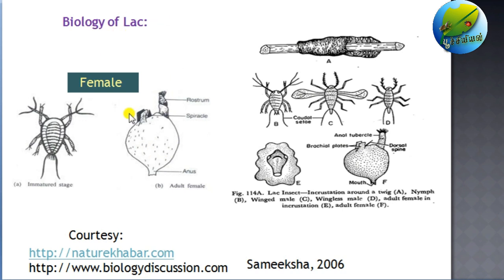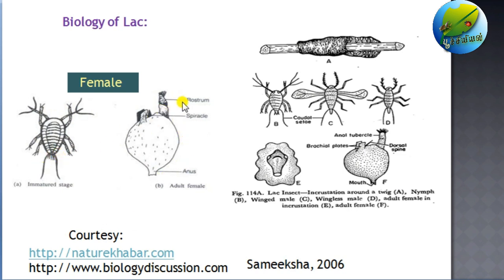Now let us look into the biology of the lac insect. Female lac insects in their immature stages — especially during the first instar — have all appendages like antennae, legs, and setae. When they go for the first molting, they lose all these parts like legs. As they reach adulthood, the only appendages visible outside will be the rostrum, spiracles, and the anal region.